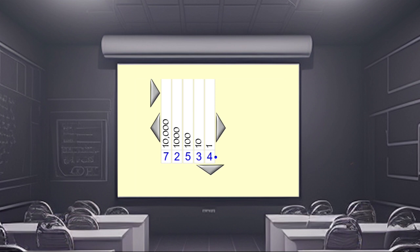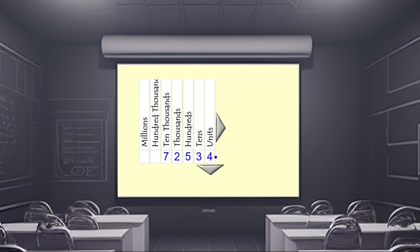But it doesn't stop there — we have more column headings. Let's turn those into words. I'll put a couple more digits in here, and we'll have this big number: six million, one hundred and seventy two thousand, five hundred and thirty four. And of course the column headings would go on and on if I had more room, but I'm going to stop at millions.